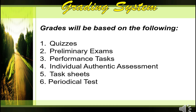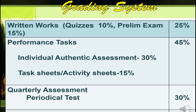For the grading system, you will be graded based on the following. We have quizzes, preliminary examinations, performance tasks, individual authentic assessment, task sheets or activity sheets, and periodical tests. Written works — composed of quizzes at 10% and preliminary exam at 15% — total 25%. Performance tasks are divided into two: individual authentic assessment at 30%, and task sheets and activity sheets at 15%. Quarterly assessment, also known as your periodical examination, is 30% of your grade. All in all, we have 100%.